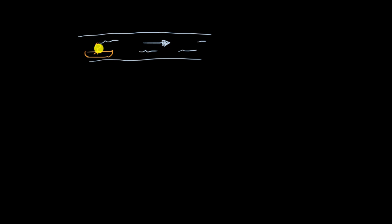Let's say that you have decided to go canoeing. This is a top view of our river right here. The river is going towards the right. There are two different directions you could be canoeing in: someone canoeing in the same direction as the current — downstream — and another person canoeing the other way, upstream.